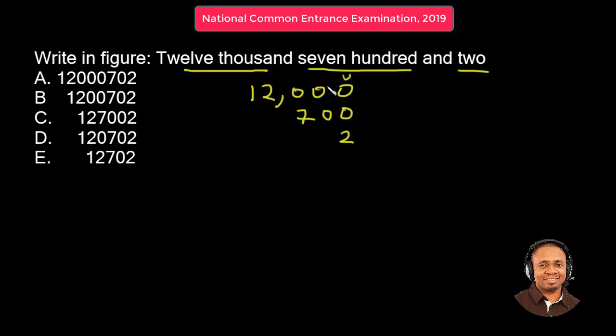this is the unit, this is the tens, this is the 100 column, this is the 100 column, and this is the 10,000 column. Okay? Good.